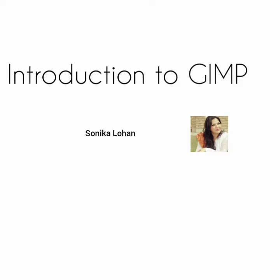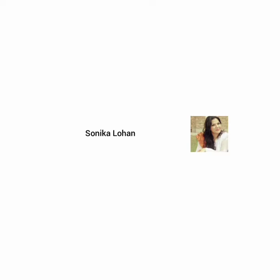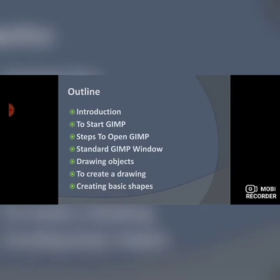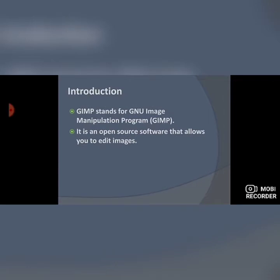Good morning students, today we are going to start a new chapter which is introduction to GIMP. GIMP stands for GNU Image Manipulation Program. It is an open source software that allows you to edit images. Open source software means it is freely available and you can freely download it, and it allows you to edit various types of images.